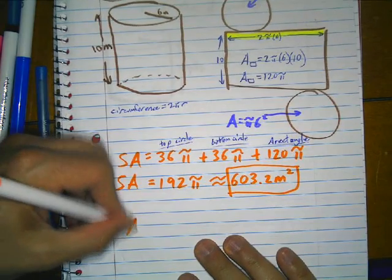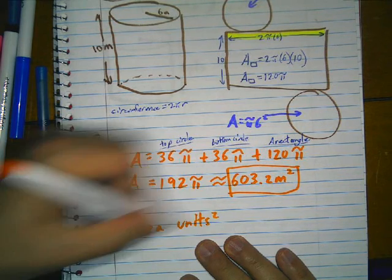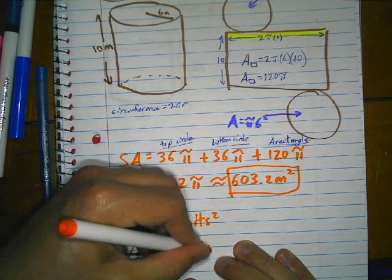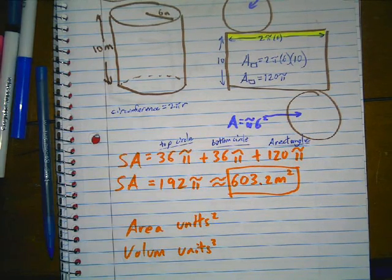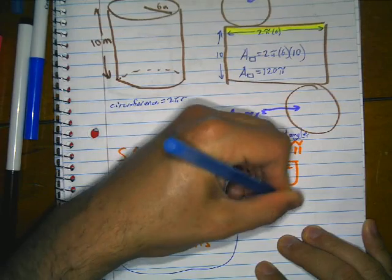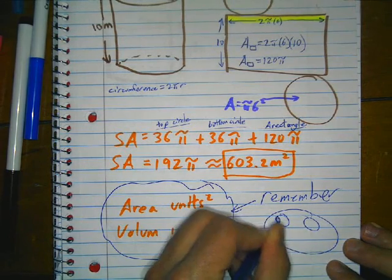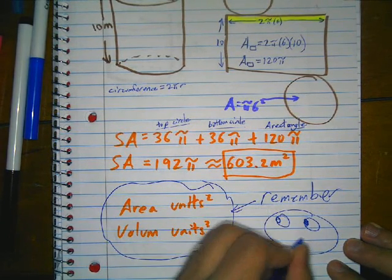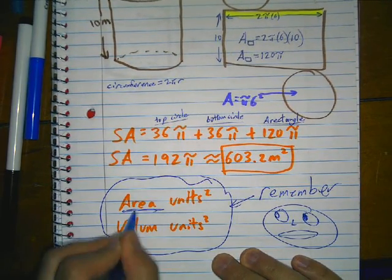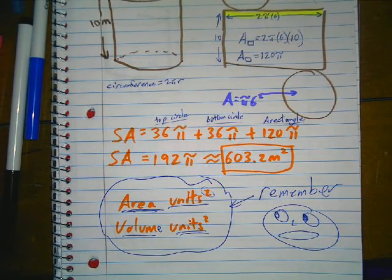Remember: area has units squared, and volume has units cubed. This is very important to remember. Don't forget — area has units squared, and volume has units cubed. And that is it for these notes.